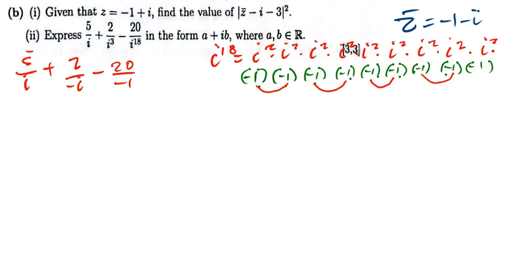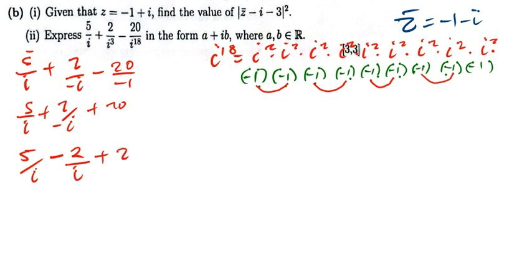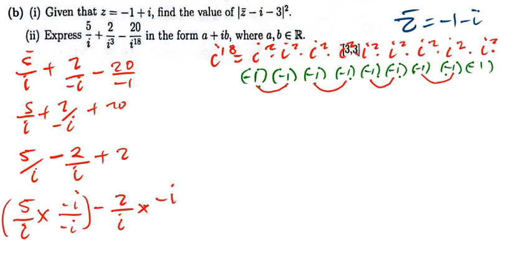So I have 20 divided by negative 1, which is the same as plus 20. So I have 5i plus 2 over negative i, plus 20. To make things simpler, it's the same as 5 over i minus 2 over i plus 20. Now we can get the conjugate.